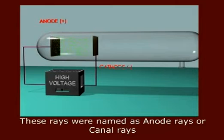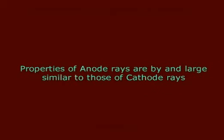These rays were named as anode rays or canal rays. Properties of anode rays are by and large similar to those of cathode rays.